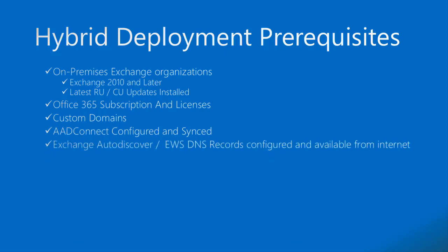On-premises Exchange Auto-Discover and Exchange Web Services must be configured and available from the internet. If these services are not available from the internet, we will not be able to complete the setup. We also need public certificates with SAN entries — this is a mandatory requirement for Exchange Web Services and TLS mail routing to work properly.